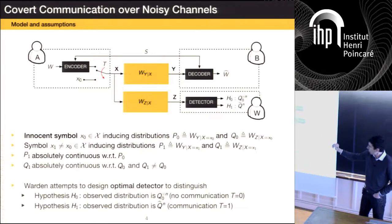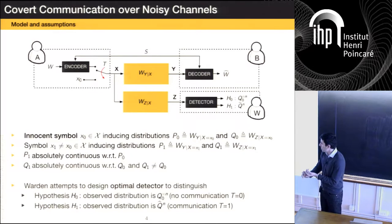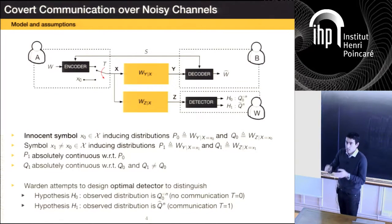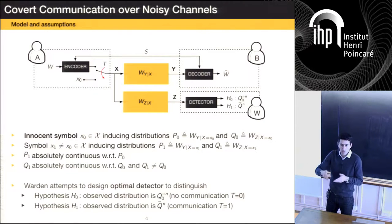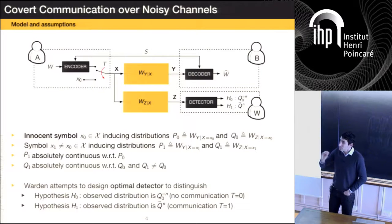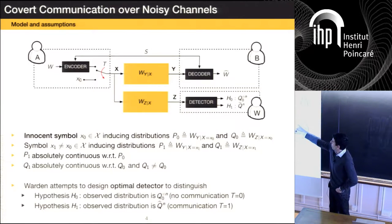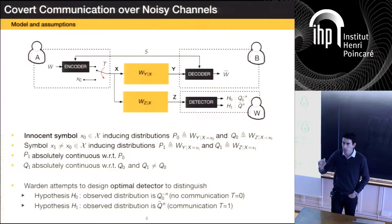The receiver has access to the secret key and has to make a decision based on the channel output and the secret key. The warden, on the other hand, has to build a statistical test. Hypothesis H0 is that the observed distribution over n channel uses will be Q0^n — meaning there's no communication. Hypothesis H1 is that there actually is communication. One important thing: this setup assumes the attacker is able to construct Q-hat, meaning it actually knows which coding scheme we're using. We're not hiding how we communicate from the warden — the code we would use if we were to communicate is public knowledge.